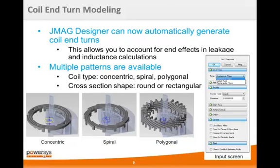The next new feature is the coil end modeling tool. JMeg Designer can now automatically generate coil end turns, which allows you to account for end winding leakage and inductance in your motor designs. Multiple patterns are available. As far as the coil type goes, we have concentric, spiral, and polygonal. For the cross sections of the windings, we have round or rectangular.